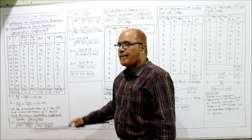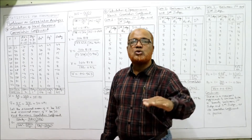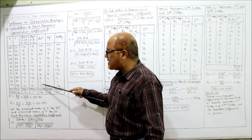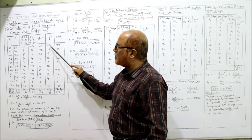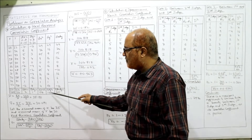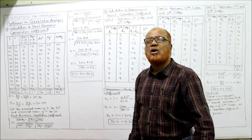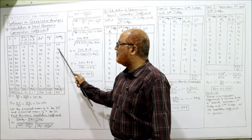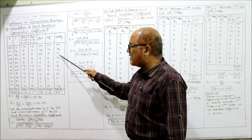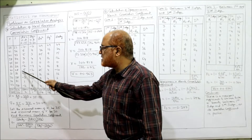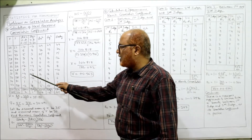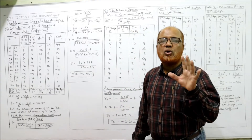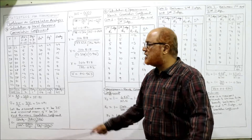Now square the dx values: 7²=49, 6²=36, 5²=25 — take the total: summation dx² = 178. For dy²: 7²=49, 4²=16, 3²=9, 4²=16 — take the total: summation dy² = 195. For dx·dy: 7×7=49, 6×4=24, 5×3=15, 3×4=12, and so on. Note that plus × minus = minus (e.g., 5×(−2) = −10); minus × minus = plus. Total: summation dx·dy = 105.